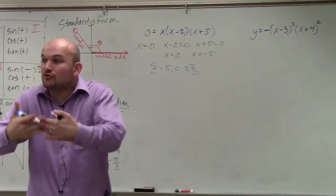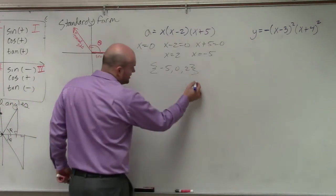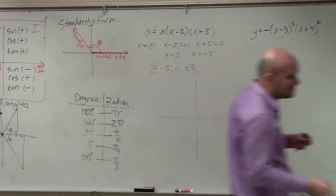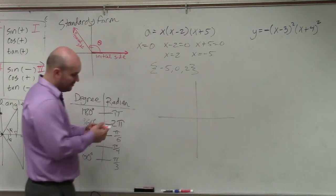But now they're asking us to graph based on finding the zeros. So what we're simply going to do is remember that the real solutions are the same as our x-intercepts on the graph.